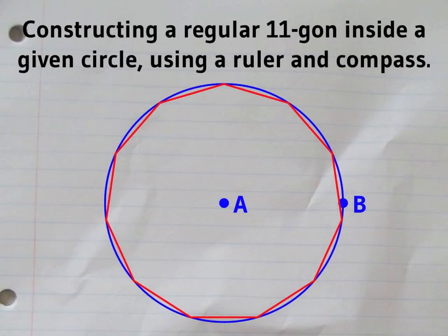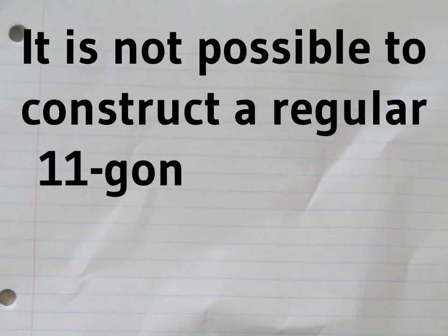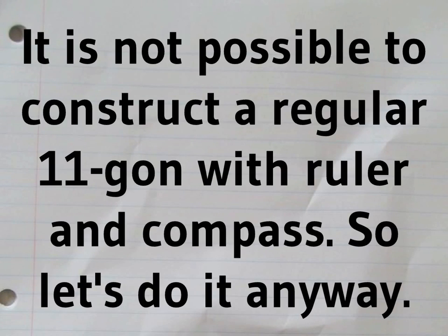A regular polygon with 11 sides is called a hendecagon. It's not actually possible to construct a hendecagon with a ruler and a compass, but you can get very, very close.